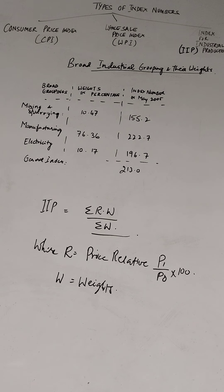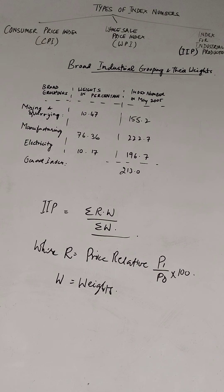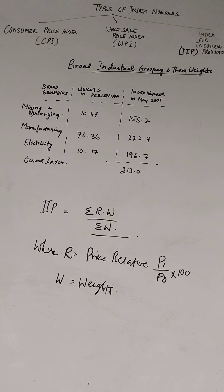The general index for industrial production is the most popular among them. In India, the index of industrial production is published by the CSO, with the base year 2004–2005. The data about the level of industrial output in the base year as well as the current year is essential in order to construct an index number of industrial production.